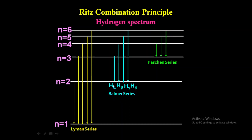Suppose the wavelength of the H-alpha line is lambda-alpha and the wavelength of the H-beta line is lambda-beta. The reciprocal of wavelength is called wave number. Suppose the wave number of the H-alpha line is nu-bar-alpha and the wave number of the H-beta line is nu-bar-beta. If you combine these two wave numbers, you get the wave number of the first line of the Paschen series. That is why it is called the Ritz combination principle.